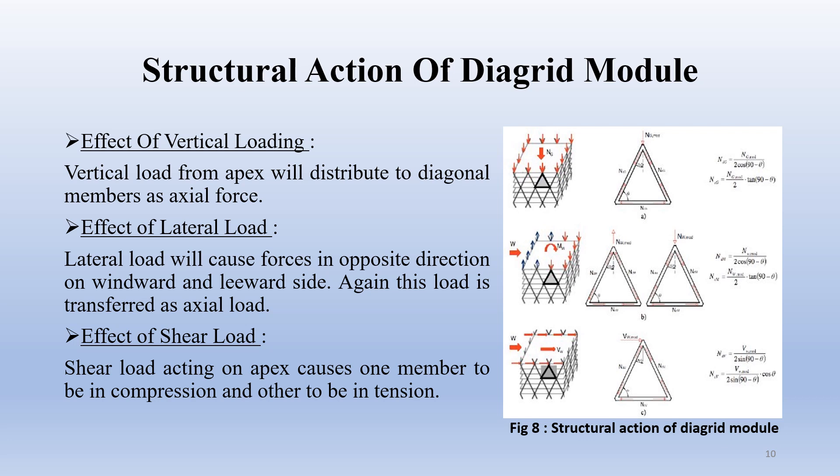The major loads acting on a building are vertical load, lateral load, and shear load. Structural action of diagrid module: under vertical loading, vertical load from the apex distributes to diagonal members as axial force. Lateral load causes forces in opposite directions on the windward and leeward side, and this load is also transferred as axial load. Shear load acting on the apex causes one member to go into compression and the other into tension.